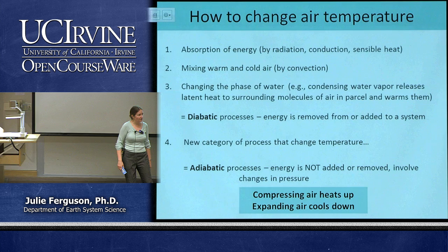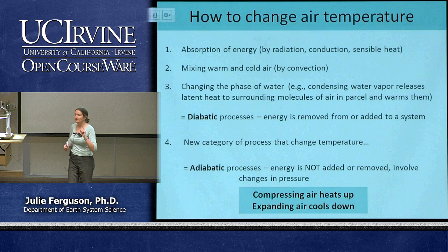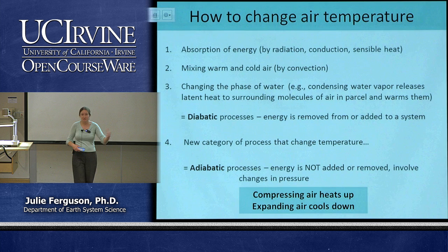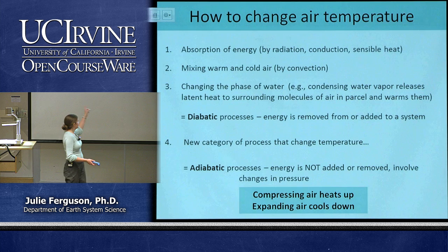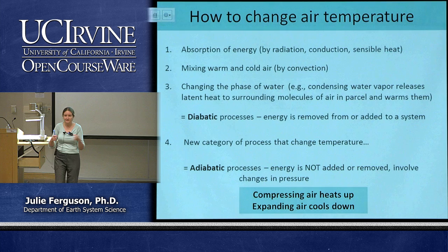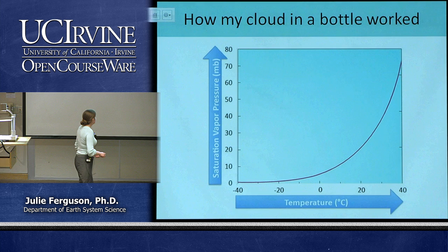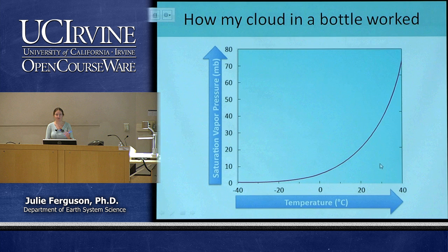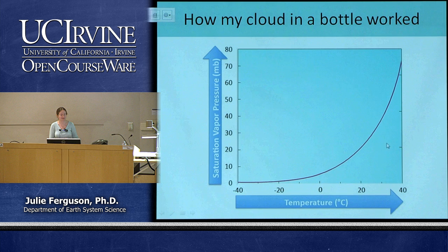On Wednesday I did my magic trick and we created clouds — I created a cloud in a little bottle simply by changing the temperature, and I changed the temperature by changing the pressure. What was I actually doing? To change the temperature of air we can add or remove energy, but we also have a second category where all we need to do is change the pressure: compress air and it heats up, allow it to expand and it cools down. I was pumping air into the bottle, which compressed it and increased the temperature, allowing more water vapor to stay in the air.